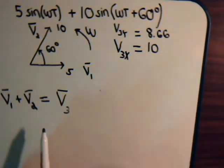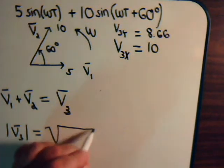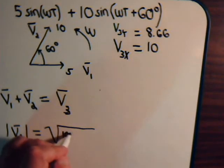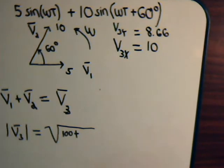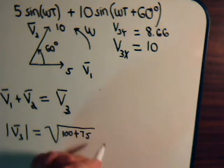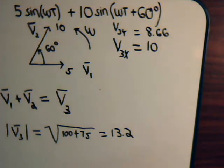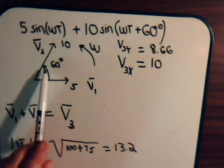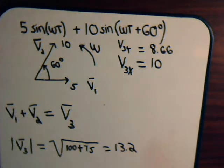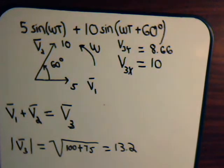We now know both components of V3: the x-component is 10 and the y-component is 8.66. The magnitude of V3 is the square root of 10 squared — that's 100 — plus 8.66 squared, which is very close to 75. So the square root of 175 is approximately 13.2. When we add these two vectors together, the resultant vector V3 has a magnitude of 13.2, but we still need to find the angle it makes with the horizontal axis.